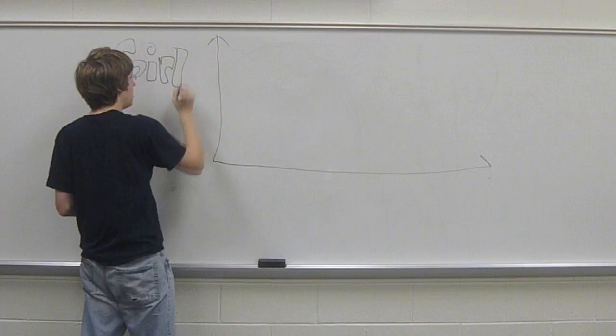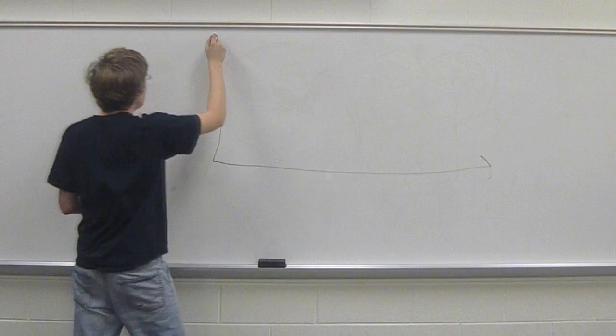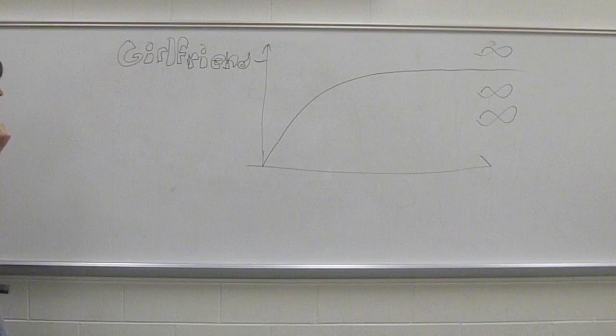she's my limit as X approaches girlfriend. It's like this function never ends. Even if I wait until infinity, I think that we'll just stay friends. She's my limit as X approaches girlfriend. It's like this function never ends. Even if I wait until infinity, I think that we'll just stay friends.